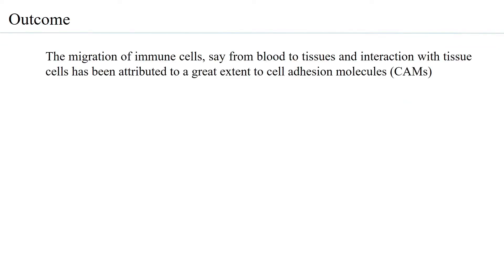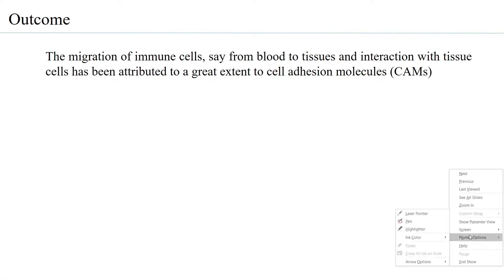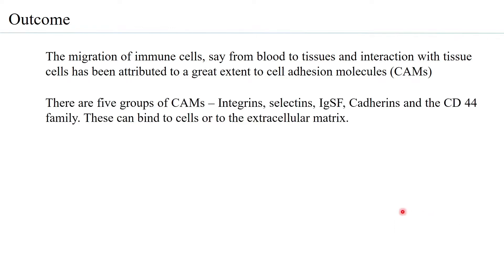The migration of immune cells from blood to tissues and interaction with tissue cells have been attributed to a great extent to cell adhesion molecules. There are five groups of cell adhesion molecules: integrins, selectins, immunoglobulin superfamily adhesion molecules, cadherins, and the CD44 family. These can all bind to cells or to the extracellular matrix.